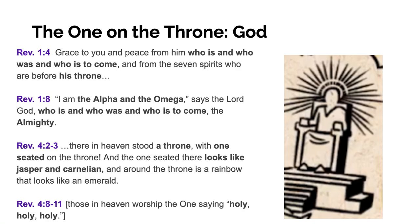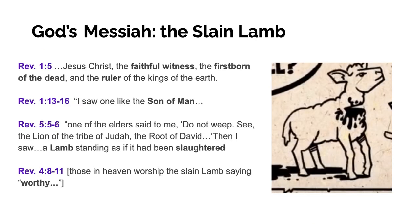In Revelation 4:2-3, when we're given the image of the throne, there in heaven stood a throne with one seated on it — described vaguely as looking like jasper and carnelian, with a rainbow around the throne. In that same chapter we hear of the elders and creatures worshiping the one on the throne saying, 'Holy, holy, holy.' Scripture is full of images of this God, and when we think of who God the creator is, that's who we should be thinking of as one of the central characters in the book of Revelation.